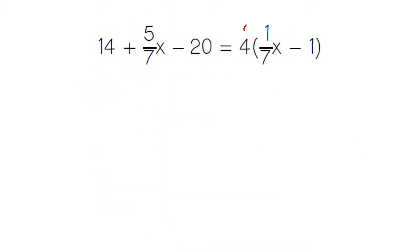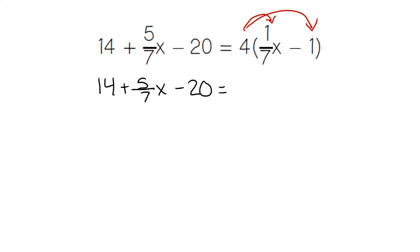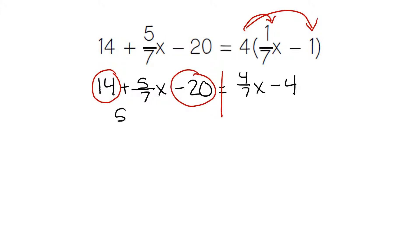Again, we start by distributing and multiplying our parentheses. On this first side there are no parentheses, so we just bring it all down: 14 plus 5 over 7x minus 20. When we distribute, 4 times 1 seventh is 4 over 7x. 4 minus 1 is going to give us a minus 4. Combining like terms on the left-hand side, we can combine the 14 minus 20 because they do not have a variable. 14 minus 20 gives us a minus 6. There are no like terms to combine on the right-hand side because 4 over 7x and negative 4 are not like terms.